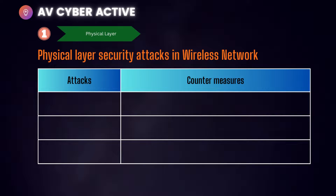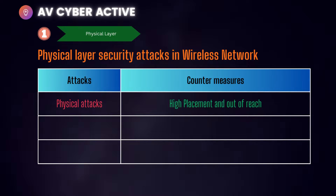Beginning with the first: physical attacks on a wireless network. Even though it's a wireless network, the device transmitting — the router or wireless access point — is still a physical device and needs to be physically protected. One countermeasure is the placement of the device: you may want to place it at a high location so that it is out of reach from attackers, even if it remains visible.